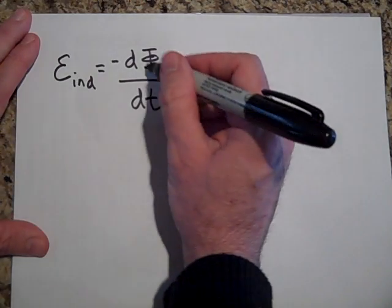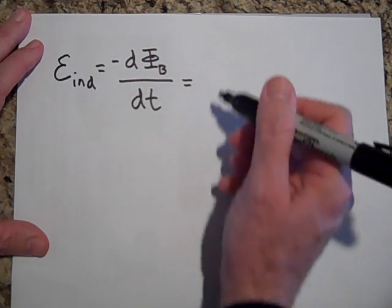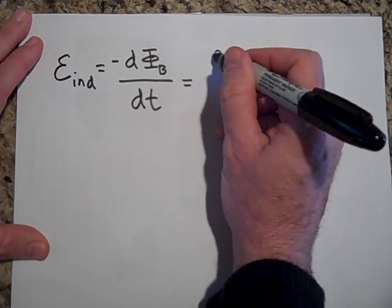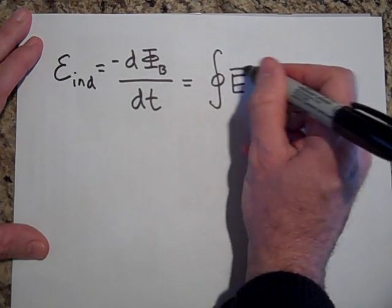That flux is the flux that's enclosed in the loop, if you have a loop. And then it's also equal to the closed loop integral of E dot DL.